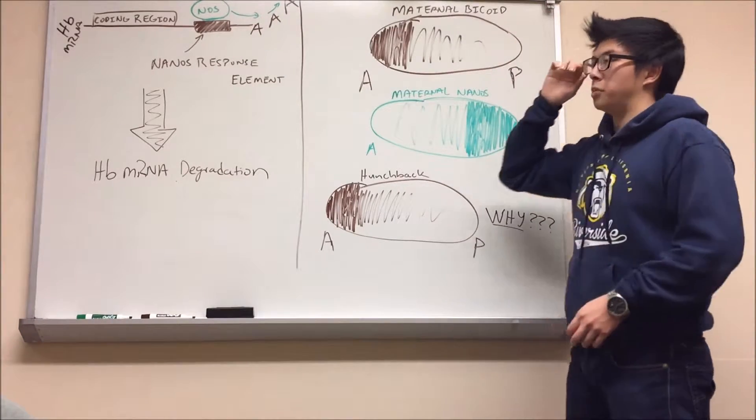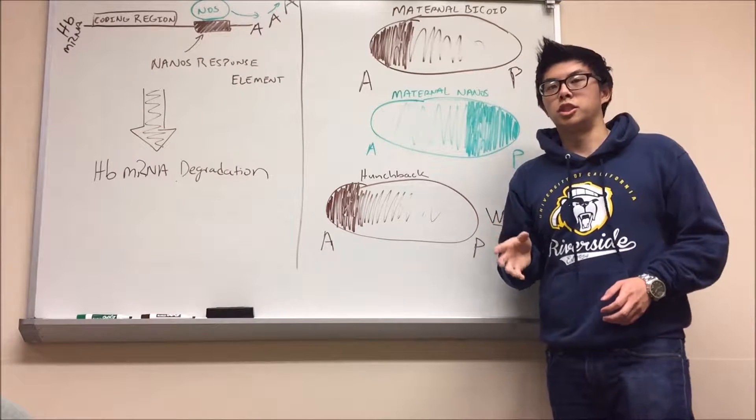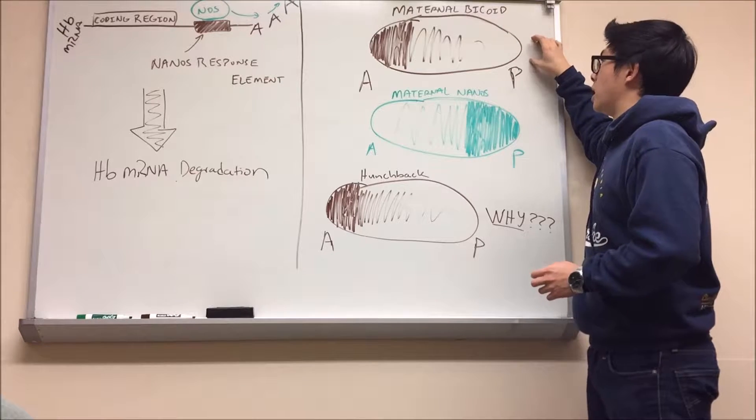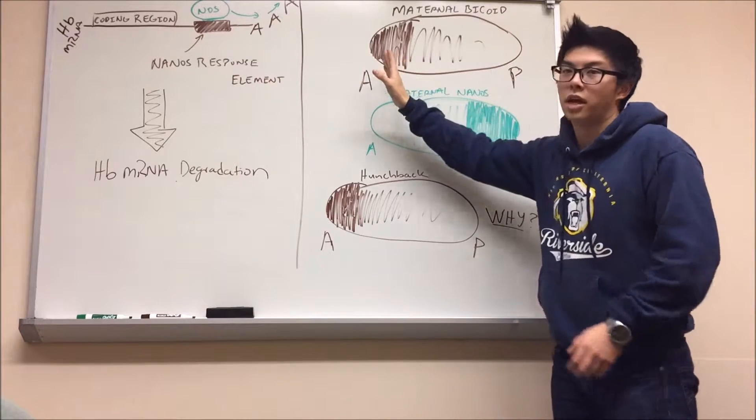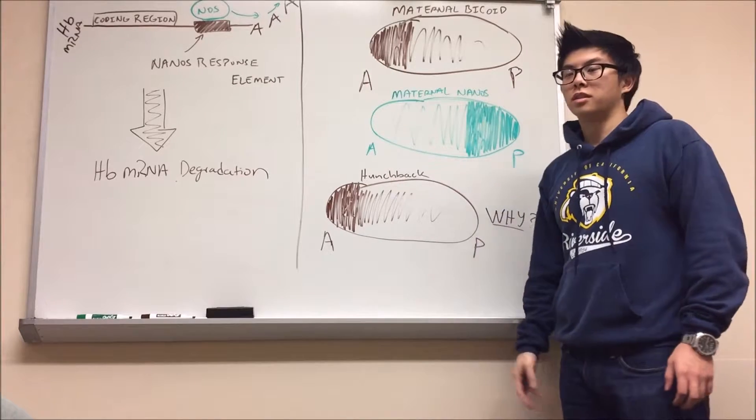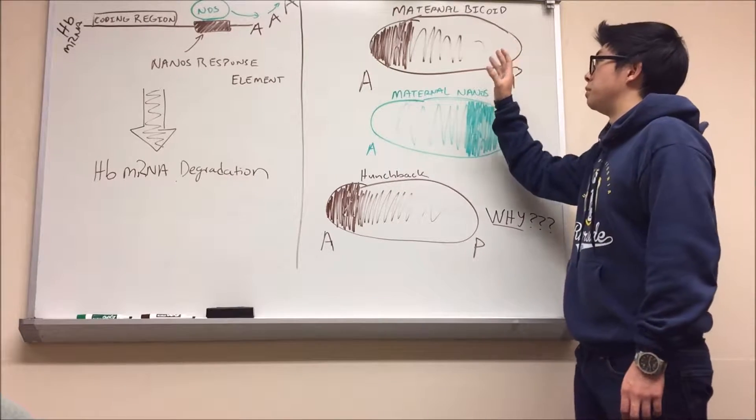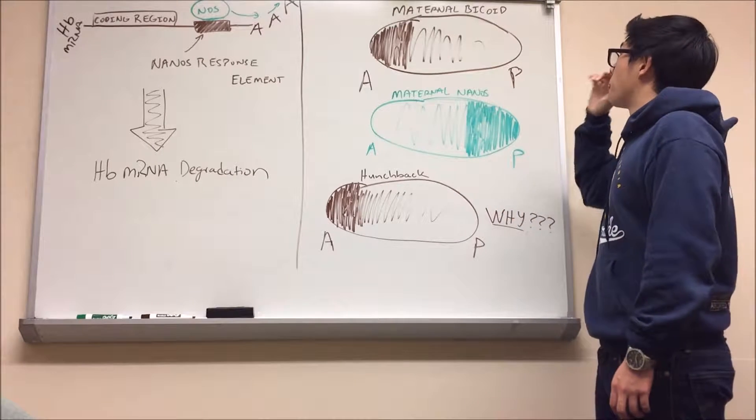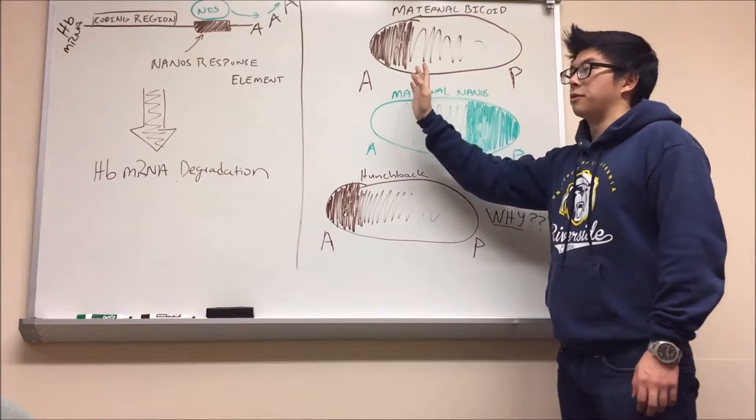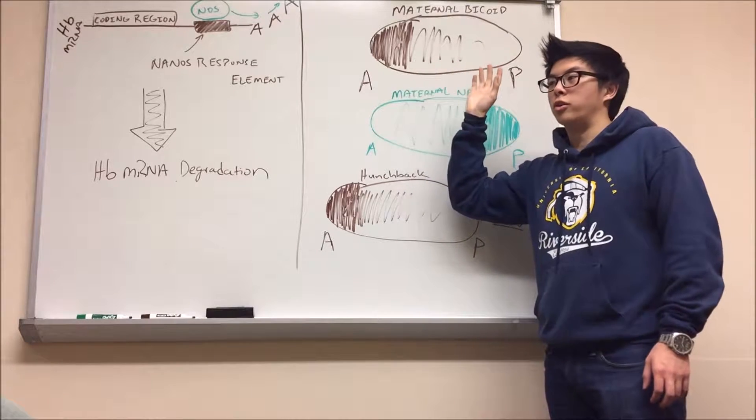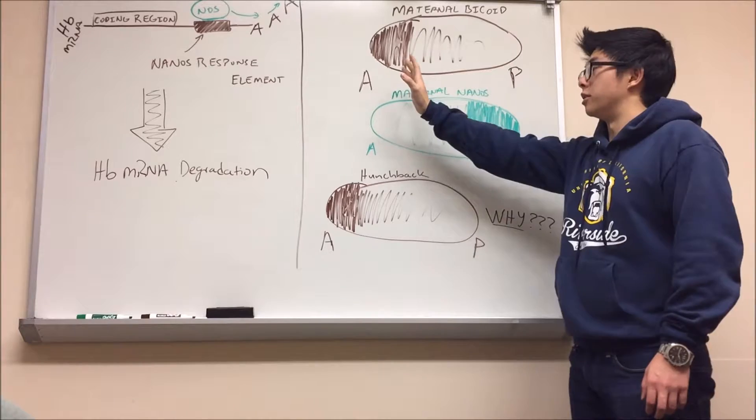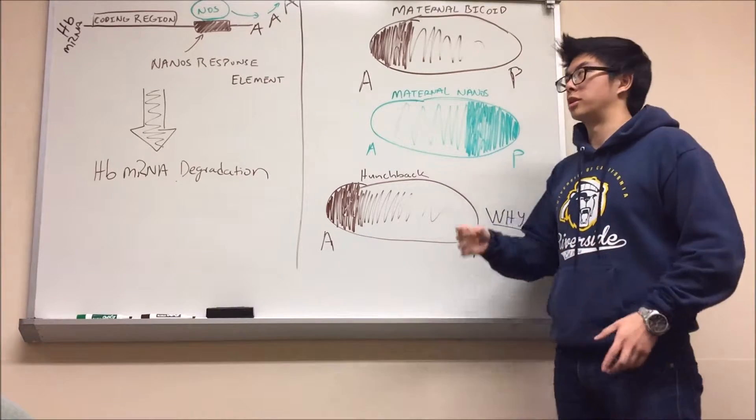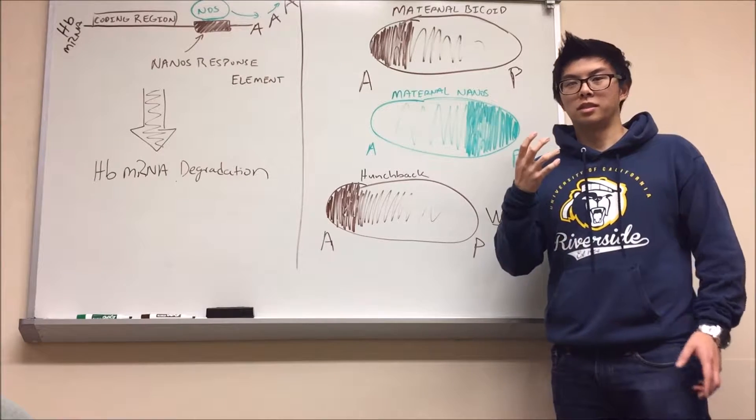I'll start with Bicoid. Bicoid is a maternally expressed gene where the mother expresses and deposits these Bicoid mRNAs to the anterior end of the embryo prior to fertilization. This results in Bicoid being known as an anterior determinant, an anterior morphogen. You can see how if you have a mutant or no Bicoid expression at the anterior end, you end up with an embryo that has what you call two telsons or you can think of it also as phenotypic two butts.